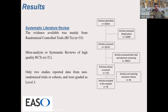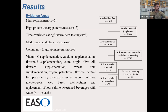These 56 studies comprised 32 randomized controlled trials, 21 systematic reviews and meta-analyses, and 2 studies reporting data from non-randomized trials or cohorts, which were already graded as level three from the beginning. The RCTs primarily covered meal replacements, high-protein dietary patterns, meal timing, restricted eating and intermittent fasting, the Mediterranean diet, community interventions, and then single studies across a very large area of interest — including vitamin C supplementation, flavonoid supplementation, flaxseed supplementation, Paleolithic diets, flexible diets, central European dietary patterns, web-based interventions, and low-calorie sweeteners.